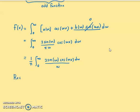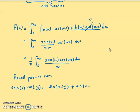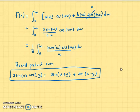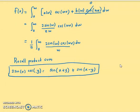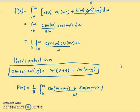Recalling the product-to-sum trigonometric identity: 2 sin(A) cos(B) = sin(A + B) + sin(A − B), we apply this to our expression. So f(x) = (1/π) ∫_{0}^{∞} [sin(ω + ωx) + sin(ω − ωx)] / ω dω.